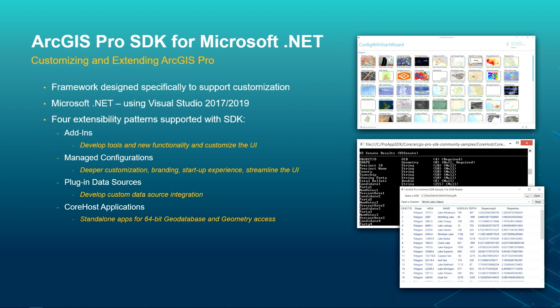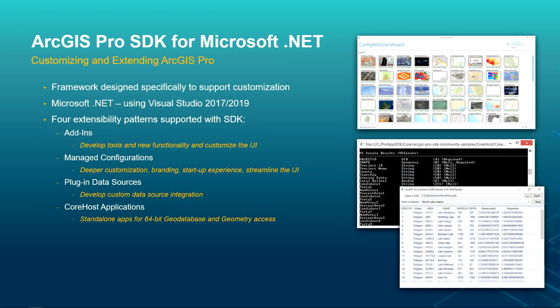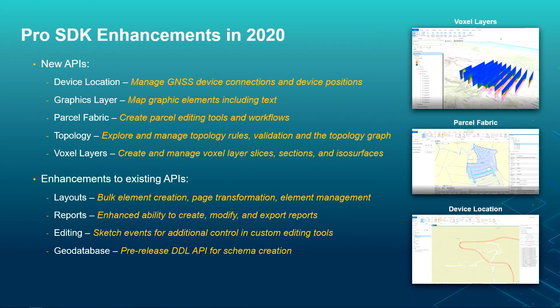The next pattern is plug-in data sources, which provides custom data to be integrated with ArcGIS Pro just like standard feature layers or tables. The last pattern is core host applications, which allows developers to build standalone applications for 64-bit geoprocessing or geometry access — essentially running ArcGIS Pro headless on a schedule. In 2020, new APIs were introduced for device location, graphics layer, topology, and voxel layers, along with significant work on existing APIs for layouts, reports, editing, and geodatabase. I'd like to introduce Charlie McLeod to walk us through the ArcGIS Pro SDK and its new capabilities.